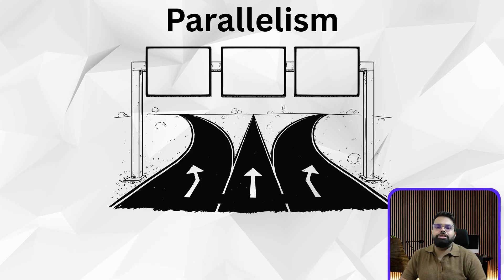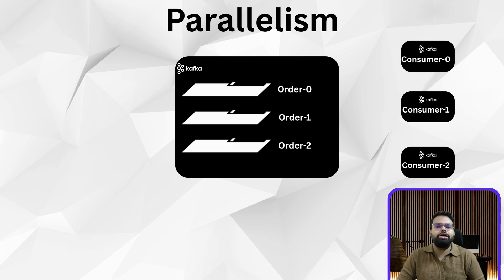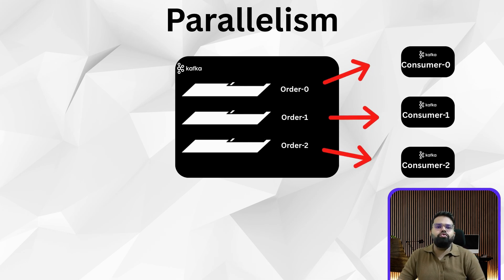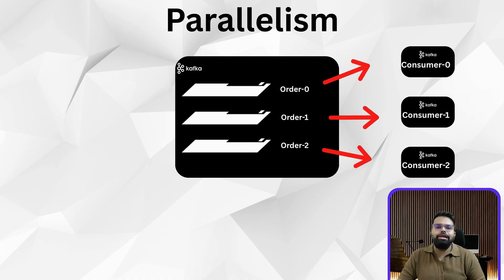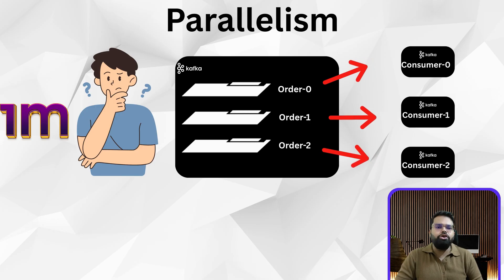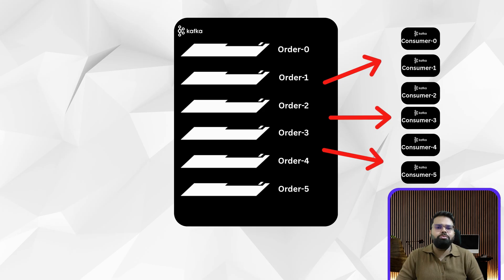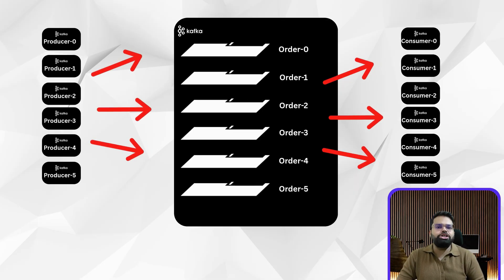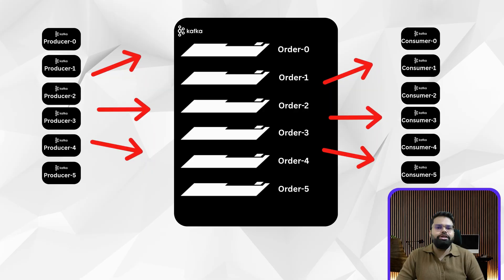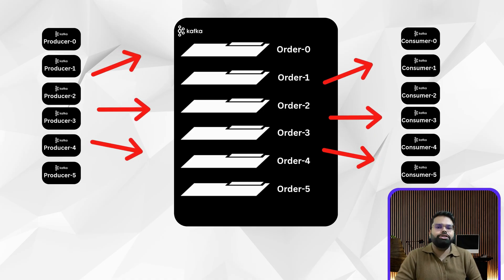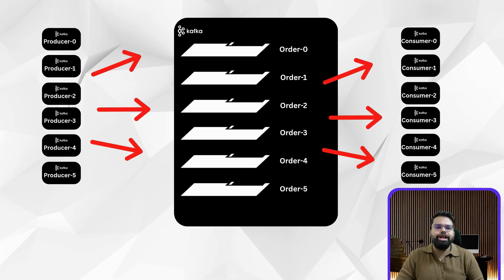Now let's talk parallelism — one of Kafka's superpowers. Say you have a topic with three partitions and a consumer group with three consumers. Kafka assigns one partition to each consumer, and they can all process messages at the same time. Need to process millions of messages? Just scale your consumers — more partitions equals more parallelism equals more throughput. Multiple producers can also write in parallel to different partitions. Each partition is independent, so consumers can read at their own pace without blocking others. That's how systems like Netflix, Uber, and financial exchanges stream data in real time.